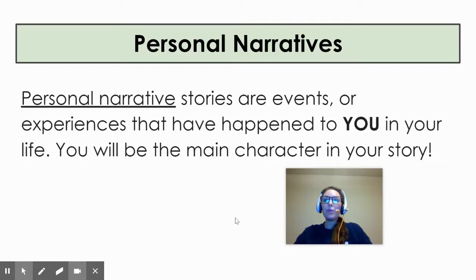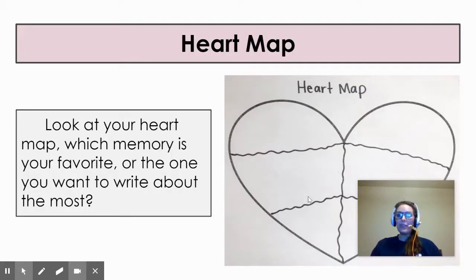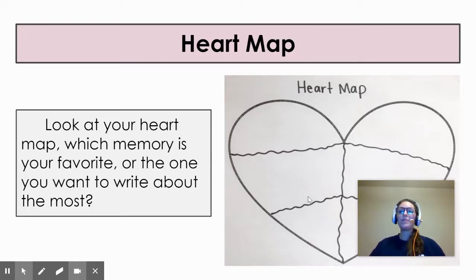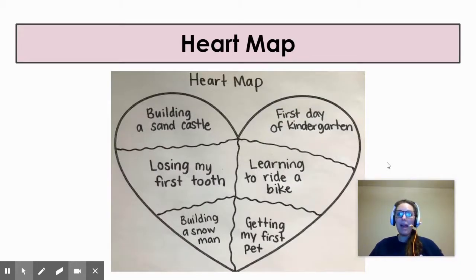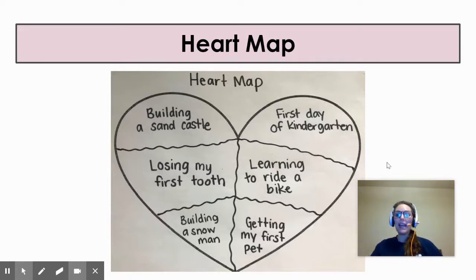Personal narratives are stories that are events or experiences that have happened to you in your life. You will be the main character in your story. So remember on Tuesday, you filled out your heart map, filling your heart with memories from your life of important events that had a strong feeling for you. This was an example of my heart map and a few events from my life that I felt were important to me. Today, you are going to watch how I choose the story I'm going to write about and how I plan my story.